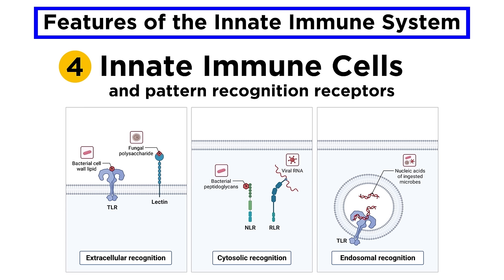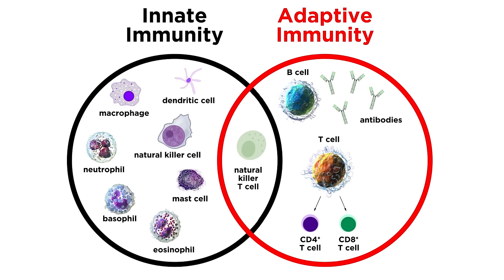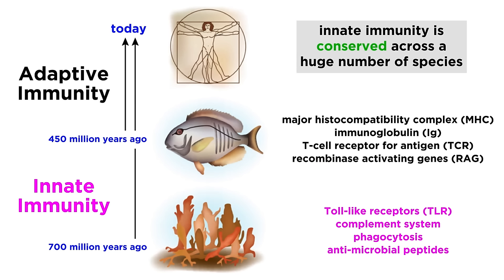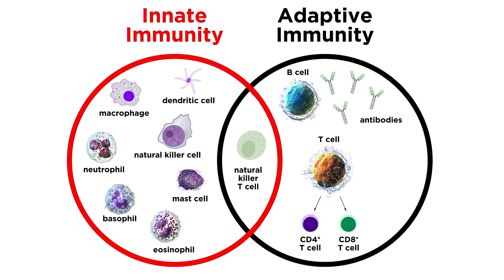We've introduced innate immune cells and pattern recognition receptors already, but as we move forward we will devote more time to understanding these powerful mechanisms of immune defense. Many immunology courses focus heavily on the adaptive immune system, avoiding detail on innate immunity, perhaps considering it less sophisticated. This may be because innate immunity is highly conserved across many species, while adaptive immunity is found exclusively in vertebrates, representing evolutionary progress. But there is so much to learn about innate immunity — this system is truly complex, elegant, and incredibly important. So let's get a closer look at all these components now.